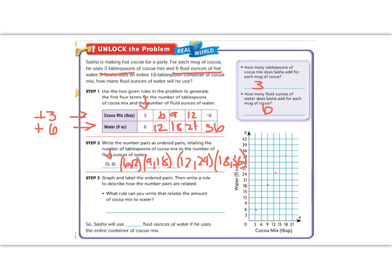So I'm going to start all the way down at zero, and then connect my dots. And remember that your line might be a little bit straighter than mine. But let's answer the question. What rule can we write that relates the amount of cocoa to the amount of water?